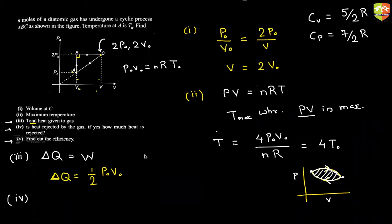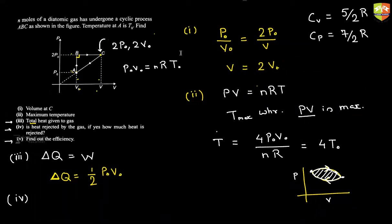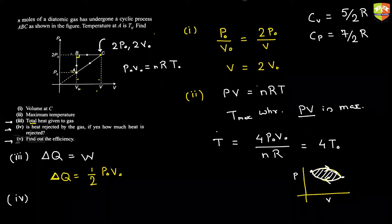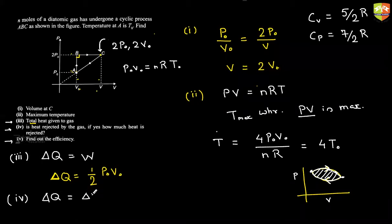For the fourth part — heat rejected — let's identify each process. B to C: temperature is increasing at constant pressure, so heat is absorbed, not rejected. C to A: temperature is decreasing, so heat is rejected here. A to B: heat is absorbed. So only C to A involves heat rejection.